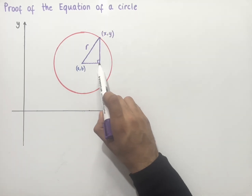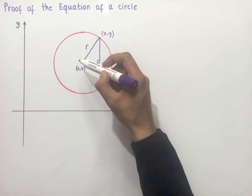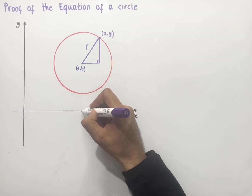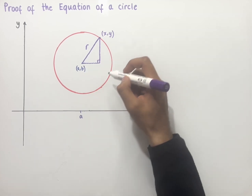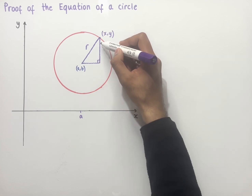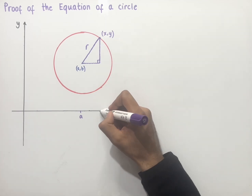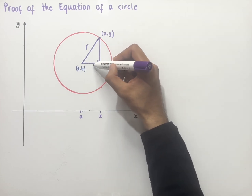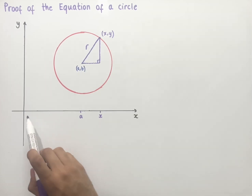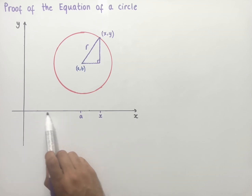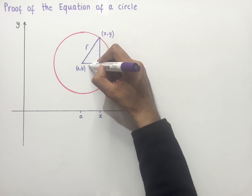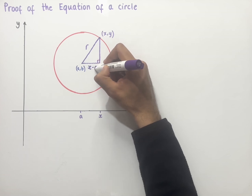If we consider the base length of this right angle triangle, the center has an x coordinate of a and this point on the circumference has an x coordinate of x. So if we wanted to work out the distance of the base length, we would have x minus a, which gives us the remaining distance required. So this distance is x minus a.